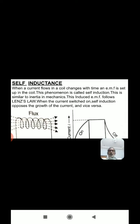When the current flowing in a coil changes with time, an EMF is set up in the coil. This is what is called self-induction. The induced EMF follows: when the current is switched on, self-induction opposes the growth of the current, and vice versa — when the current is switched off, self-induction opposes the decay of the current.